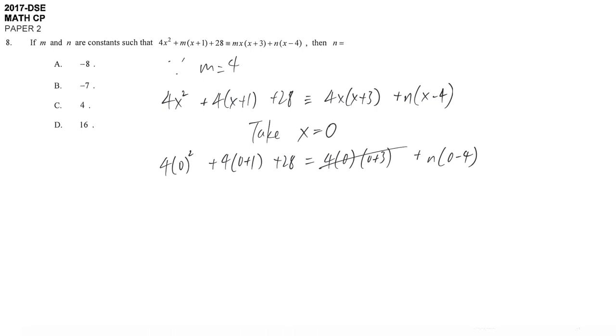So we have 4 times 0 squared. So many terms are cancelled out because they equal 0. 32 is equal to negative 4n. So n is 32 divided by negative 4, n is negative 8. We also get the same answer.